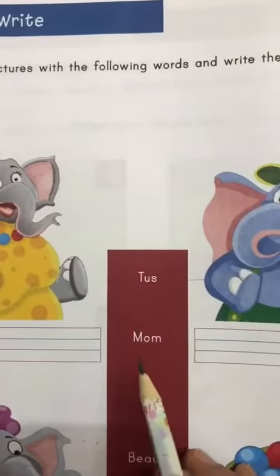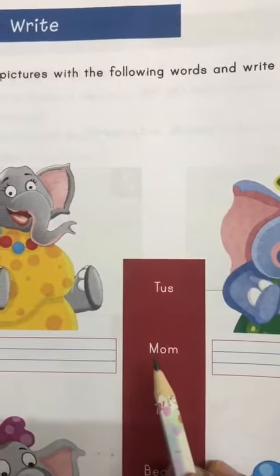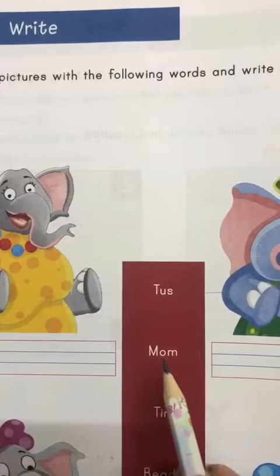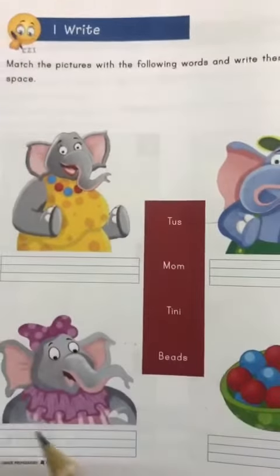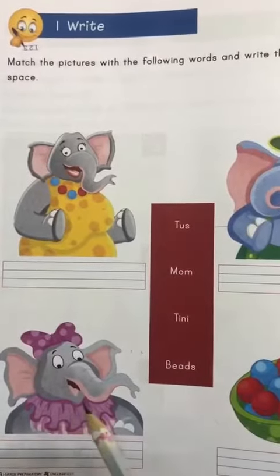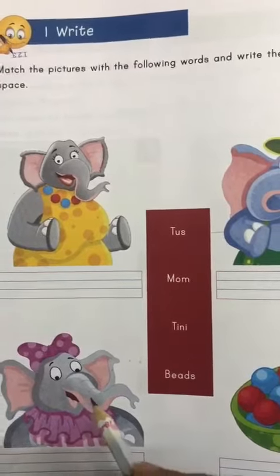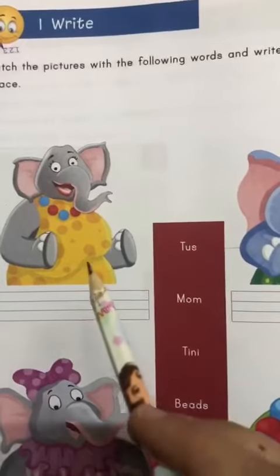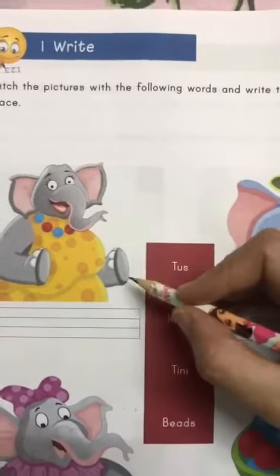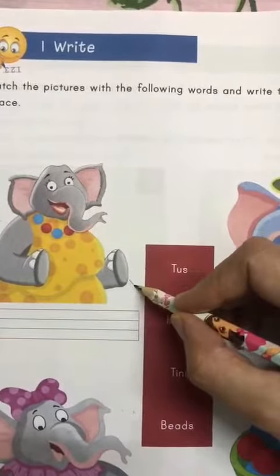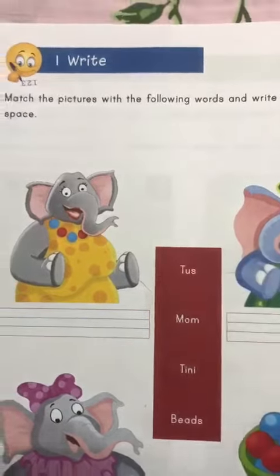Let's move on to the second word. M, A, M. Mom. Where's mom? No, no, no. Where's mom? Here. That's right. So let's match mom with her name.